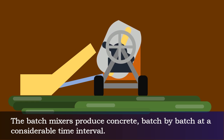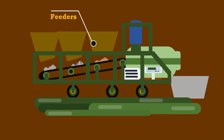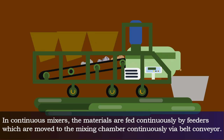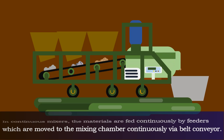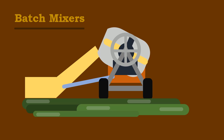In continuous mixers, the materials are fed continuously by feeders, which are moved to the mixing chamber via belt conveyor. Continuous mixers produce concrete continuously without any stoppage, as long as the machine is running and materials are supplied. This type of mixer is used for the construction of dams.